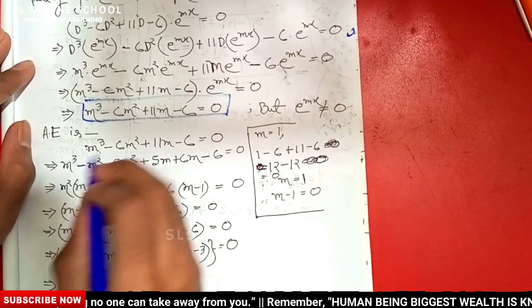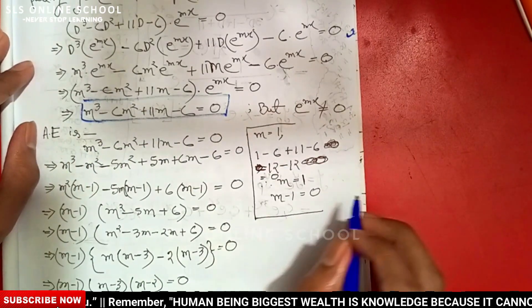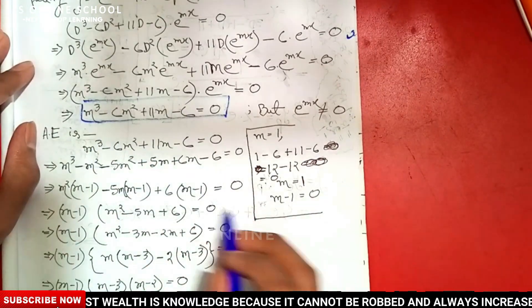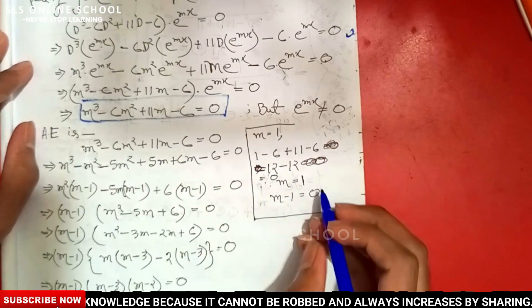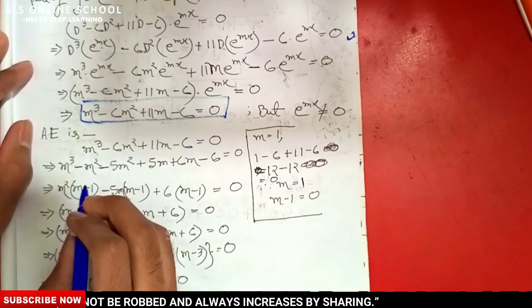This gives the auxiliary equation, and the m value is found. As usual, m³ - 6m² + 11m - 6 = 0, so (m - 1) is a factor.